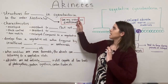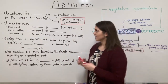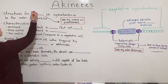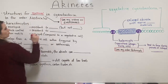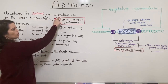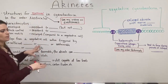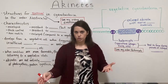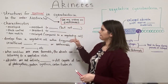Today we're going to be talking about akinetes. Akinetes are survival structures — structures that are made for survival, specifically in cyanobacteria in the order Nostocales. This is not something that just any old bacterium can do; it's really a specific group of cyanobacteria.